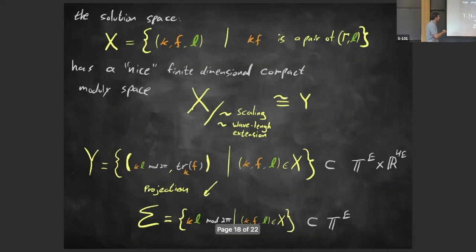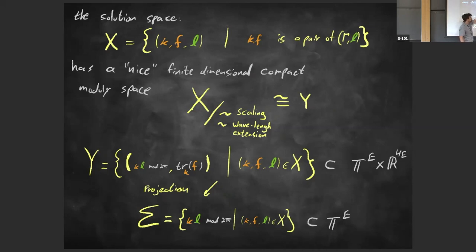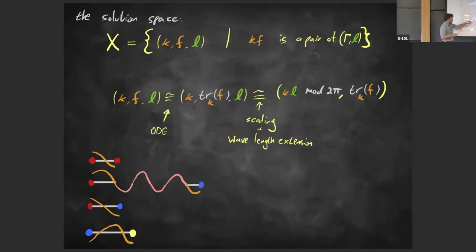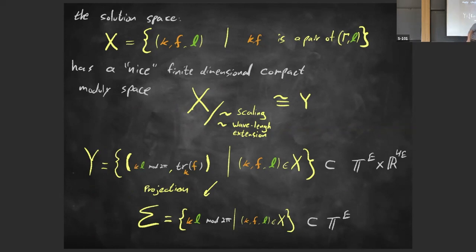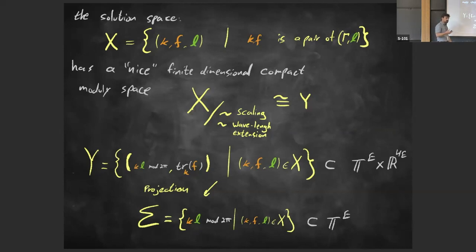The main feature behind this is that the solution space of triplets has a nice finite-dimensional compact moduli space. If I take the space X, mode out scaling and wavelength extension, I get a parameterization which is almost an algebraic variety — compact and finite-dimensional. Projecting it onto the torus, I get something that, up to exponentiation, is an algebraic variety intersecting the torus. Sarnak and Kurasov recently showed this is actually an irreducible variety, which is the key ingredient I use.